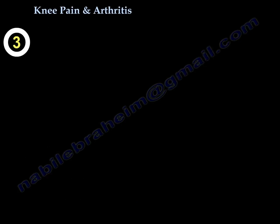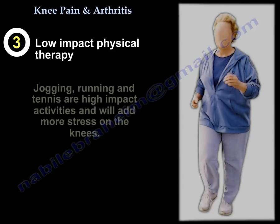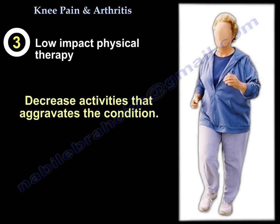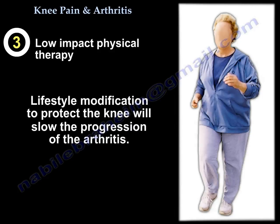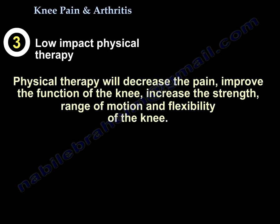The third core item is physiotherapy — specifically low-impact physiotherapy. Low-impact activities like swimming or cycling are usually better and add less stress on the knees, while jogging, running, and tennis are high-impact activities that put more stress on the knees. You should decrease activities that aggravate the condition. Lifestyle modification helps protect the knee and slow the progress of arthritis. There is strong evidence that physiotherapy helps the patient — it will decrease pain and improve function.